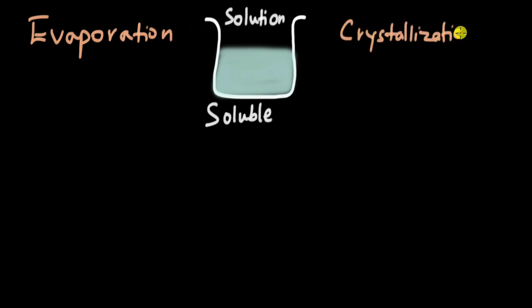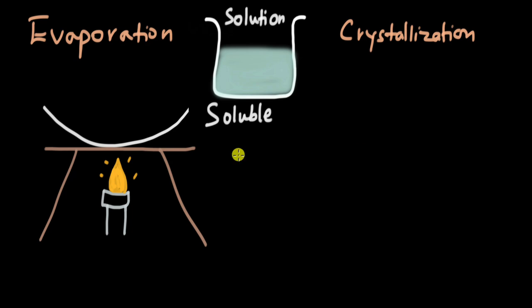We will look at evaporation in this video. To separate the dissolved solid from water, let's be specific - let's take salt and water. What we can do is take an evaporating dish, keep it on a tripod stand, and then heat it slowly from a Bunsen burner or a candle.